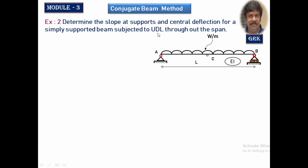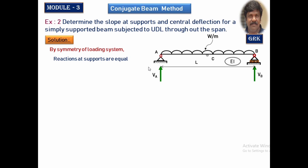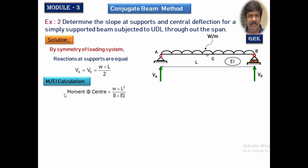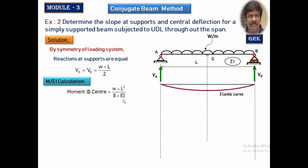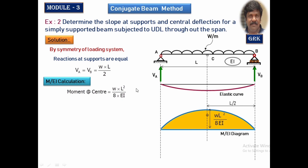Since the loading is also symmetrical here, maximum deflection occurs at the center. By symmetry, reactions VA equals VB equals WL by 2. The M by EI calculations show that the maximum bending moment at the center equals WL² by 8EI. We then draw the elastic curve and the M by EI diagram. Since it is a second-degree curve, we get a parabolic shape, with maximum bending moment at WL² by 8EI.